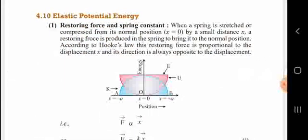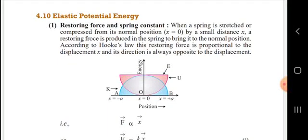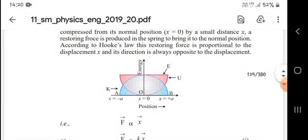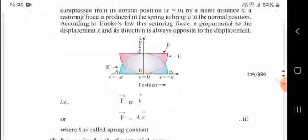Next, elastic potential energy and restoring force. The spring constant: when a spring is stretched or compressed from its normal position by a distance x, a restoring force is produced that tries to bring it back to the normal position. According to Hooke's law, the restoring force is proportional to displacement x, and its direction is always opposite to the displacement.